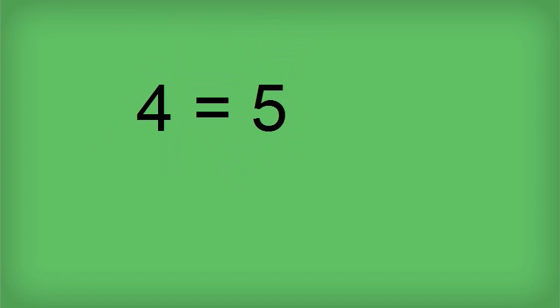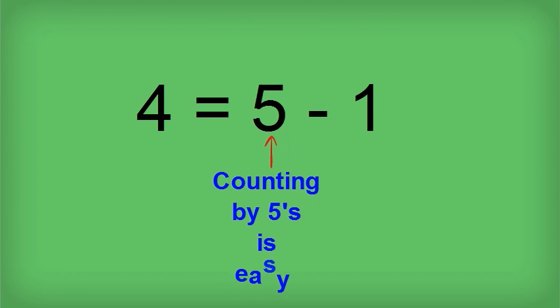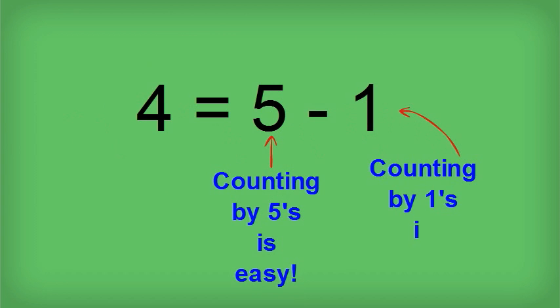When you think of four, I want you to think of four as five minus one. If you saw the sixes video, six was five plus one, but four is five minus one. So what we're going to do is count by fives, and then we're going to count backwards by ones.